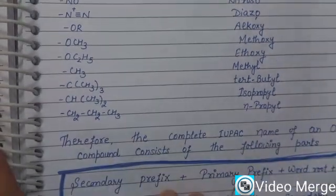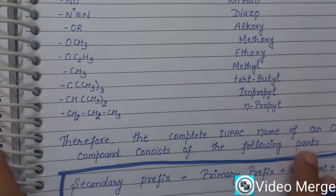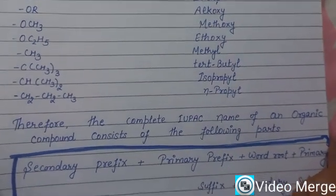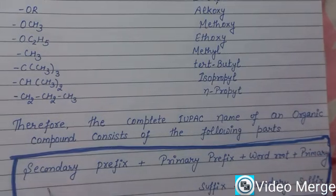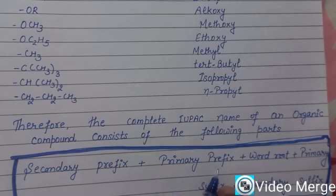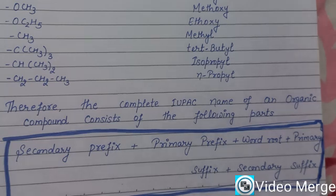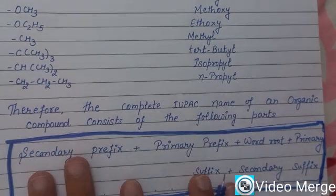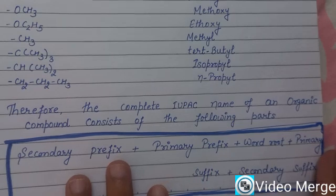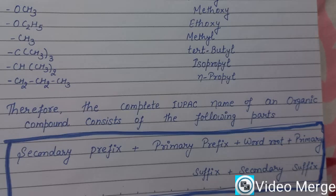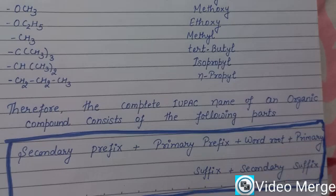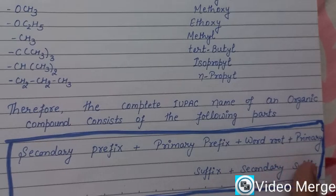The complete IUPAC name of an organic compound consists of the following parts in order: secondary prefix, then primary prefix, then word root, then primary suffix, and then secondary suffix. This system of nomenclature is used for the naming of organic compounds. In the next video, we will use these rules and apply them to many examples for the naming of organic compounds.